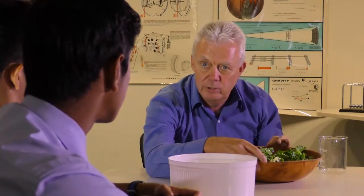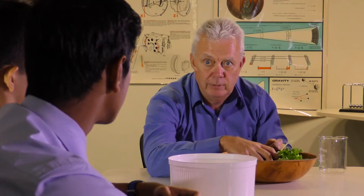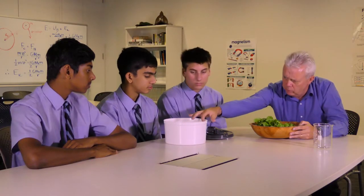A salad spinner is a device to remove water from washed salad leaves. It also involves circular motion.